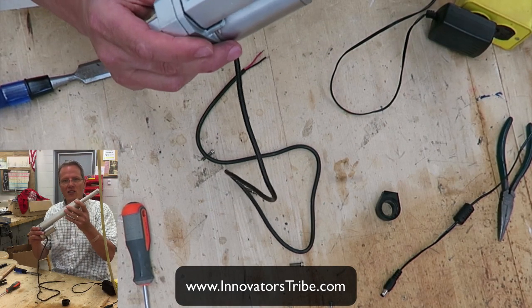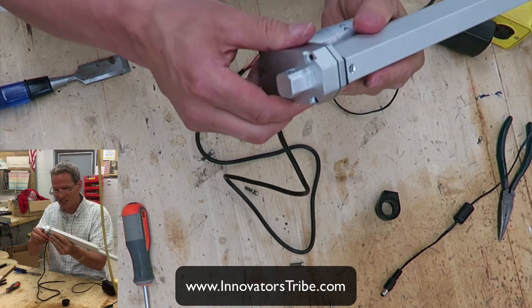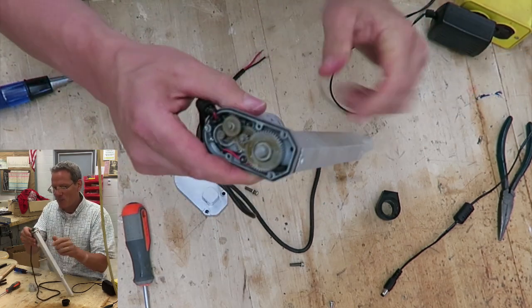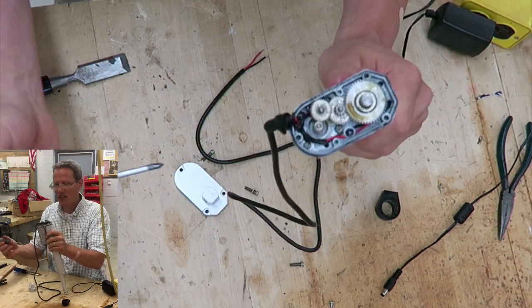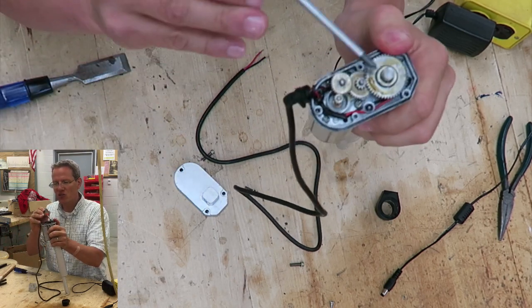Let's take apart this linear actuator to see how it works and what's inside. Once I take the bottom off, I can see there's gears inside of here.